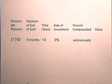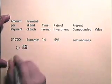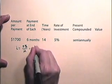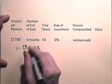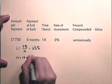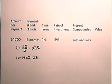We first find I, which is the rate per period. I is 5% divided by 2 since interest is compounded semi-annually. So the rate per period is 2.5%. And the number of periods is 14 years semi-annually, which is 28 periods. Now in order to find the present value of this annuity, we will need to go to the present value of the annuity table.